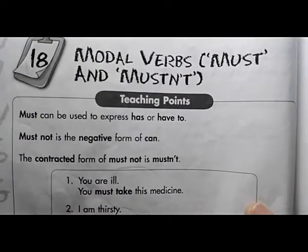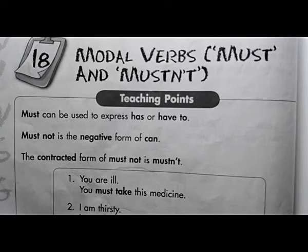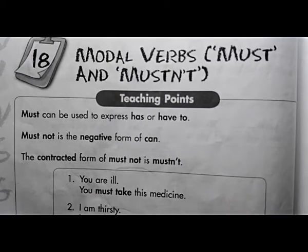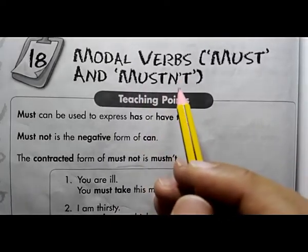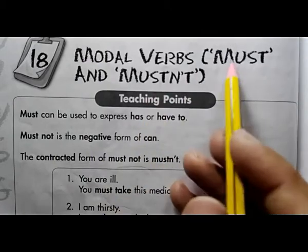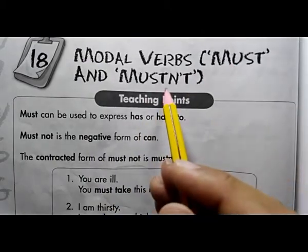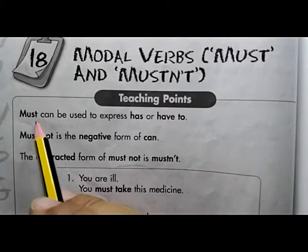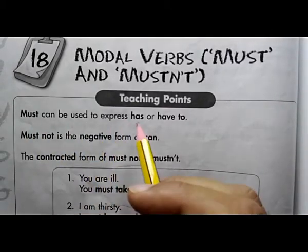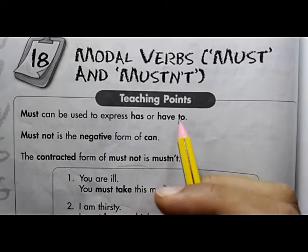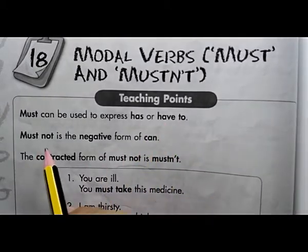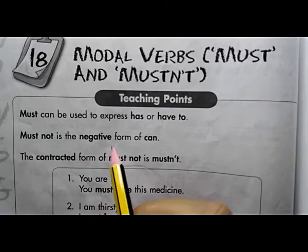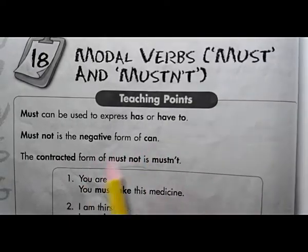As-salamu alaikum dear students. This is unit number 18, page number 60 from the grammar book, Grade 3. The topic is modal verbs: must and must not. Let's see what must and must not are used for. Must can be used to express 'has to' or 'have to'. Must not is the negative form. The contracted form of must not is mustn't.